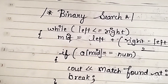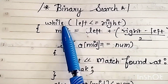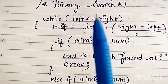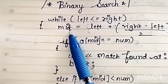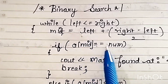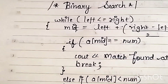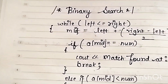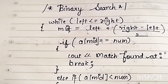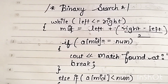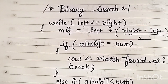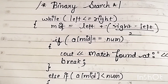Now let's go to the logic. We use a while loop and have some variables: left, right, and mid — these are all positions. A[mid] is the element at the middle position, and NUM is the number we are searching for. First, we enter the elements list in ascending order, then we ask which element to search for.